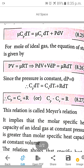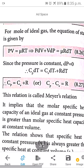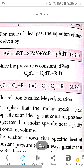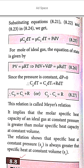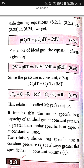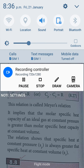Cp represents molar specific heat capacity at constant pressure, and Cv represents molar specific heat capacity at constant volume. Therefore, Cp minus Cv equals R. This R is the universal gas constant — this is the main Mayer's relation. Thank you.